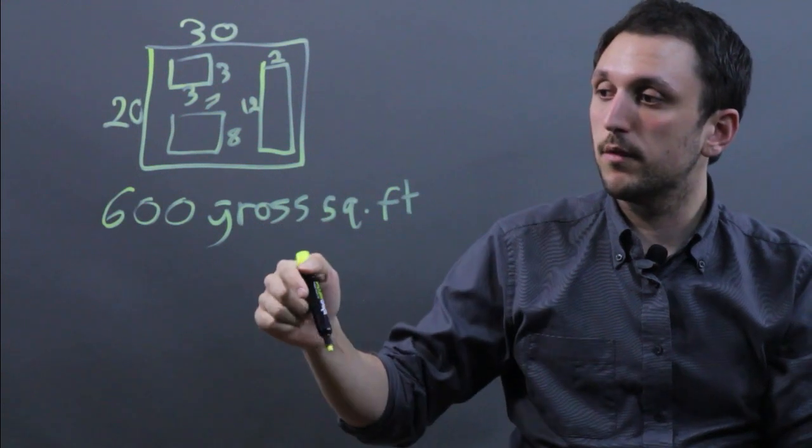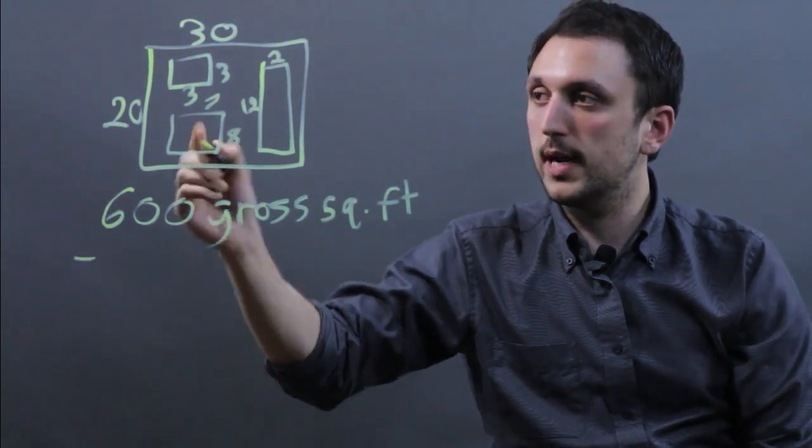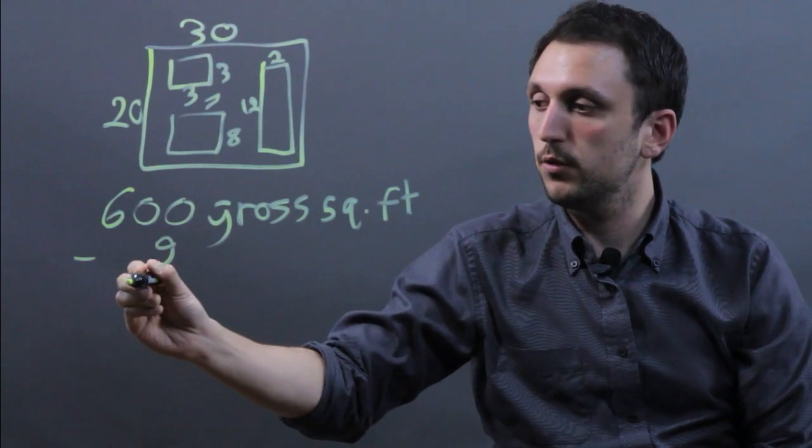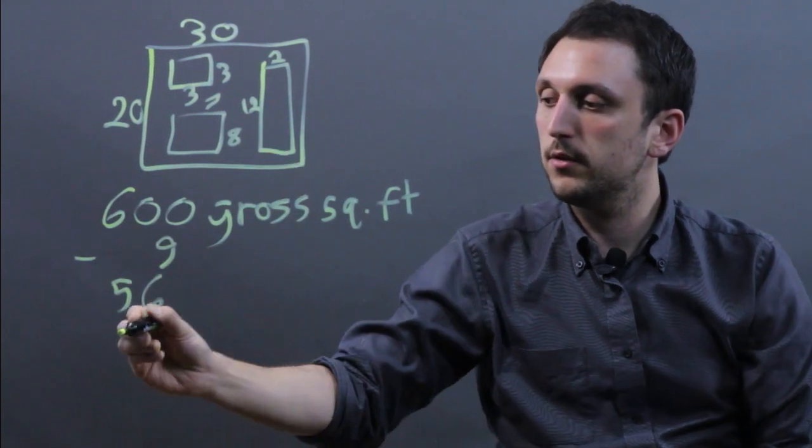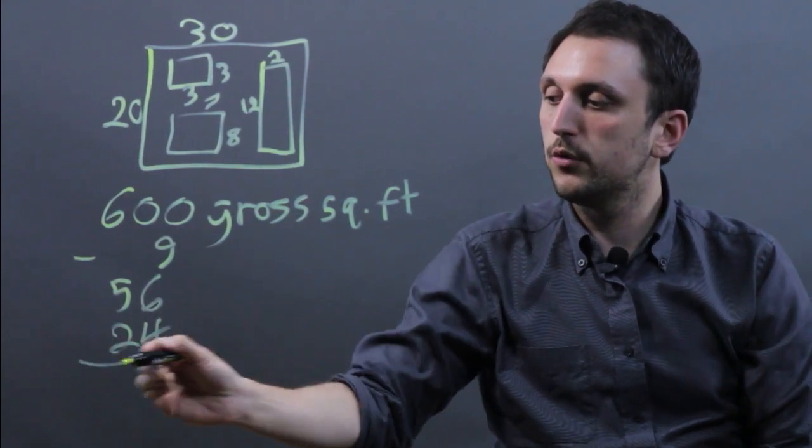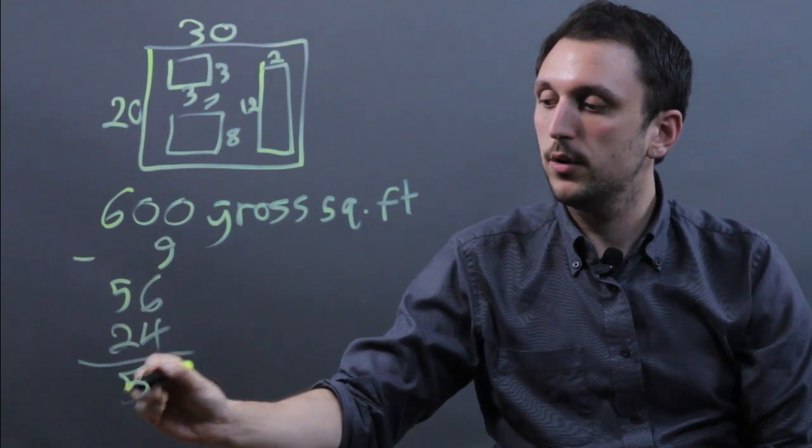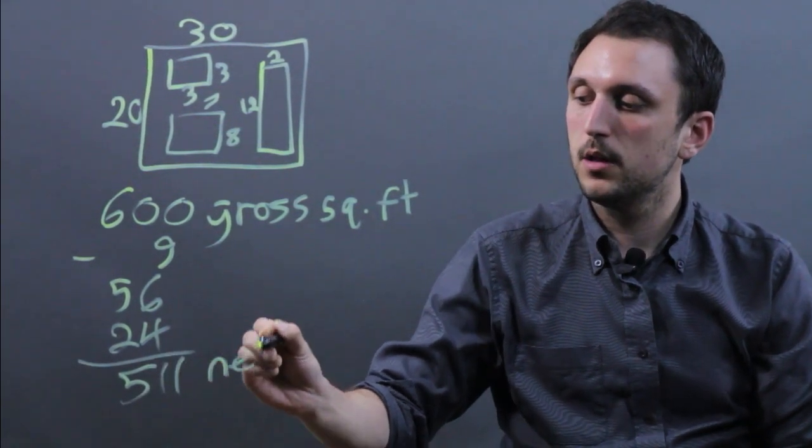So, to get net square feet, we're going to take 600 and we're going to subtract 3 by 3, which is 9, 8 by 7, which is 56, and 12 by 2, which is 24, which will leave us with 511 net square feet.